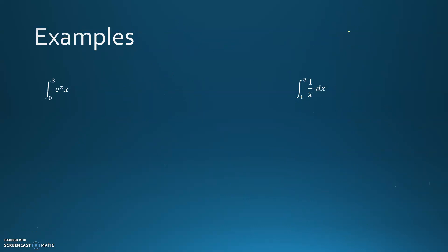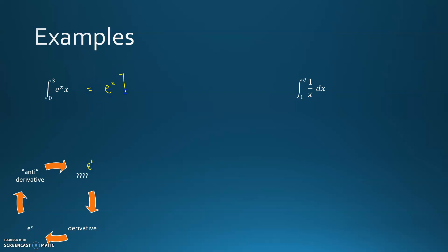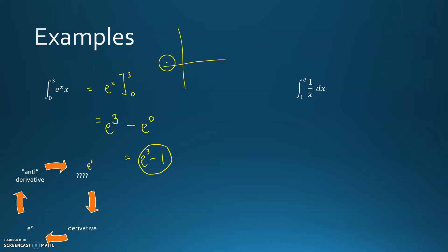Here are two more examples. First, the function is e to the x. What was it before taking the derivative? e to the x is its own derivative, so the antiderivative is also e to the x, evaluated from 0 to 3. Plugging in: e³ minus e⁰ equals e cubed minus 1. That's the area between 0 and 3 under the exponential function.